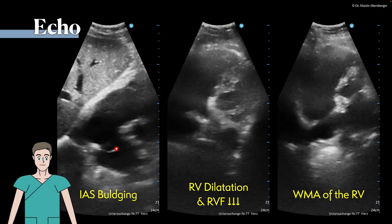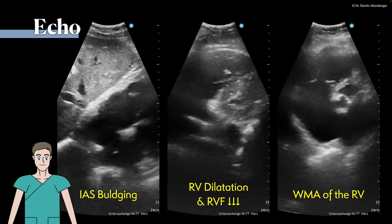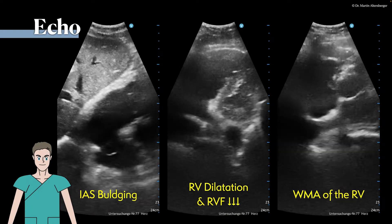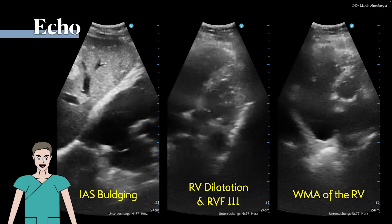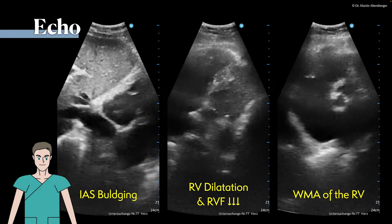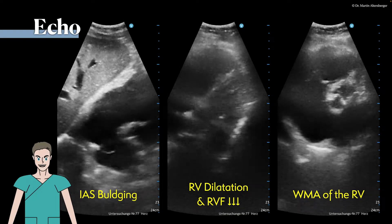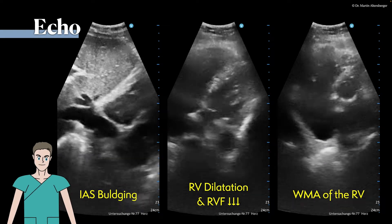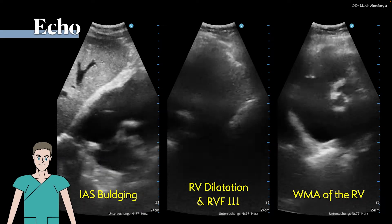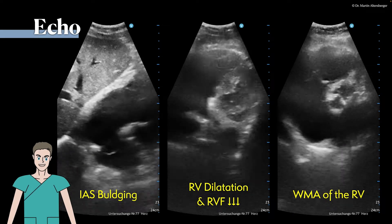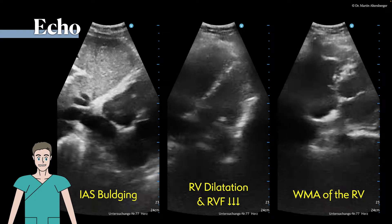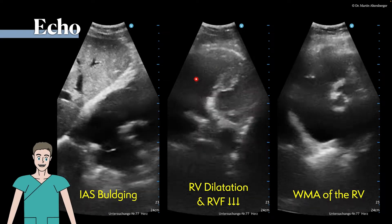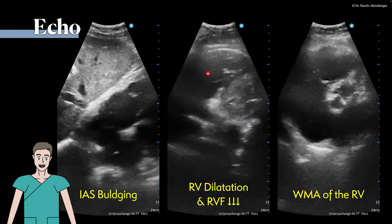So it's moving a little, but already in this first view we can appreciate that the problem has to be more in the right chambers. When we move on and scan more of the right heart and also of the left heart, we can see that the right ventricle is severely dilated.